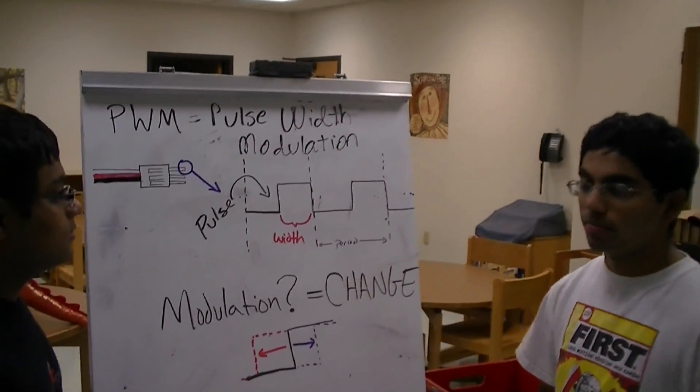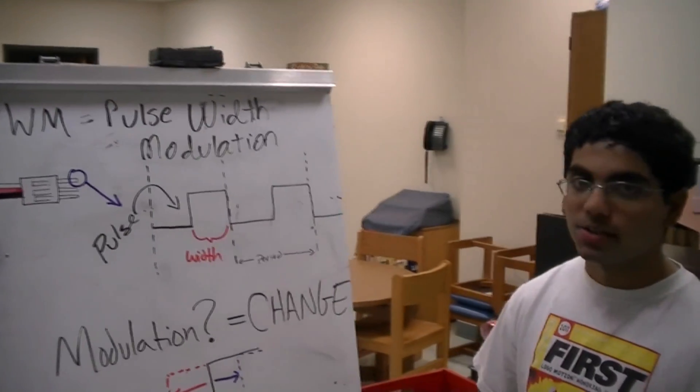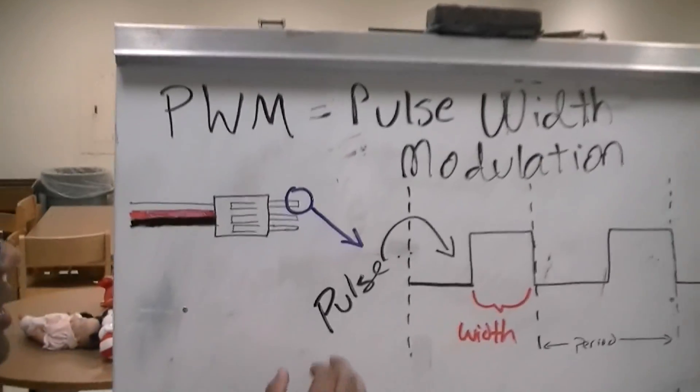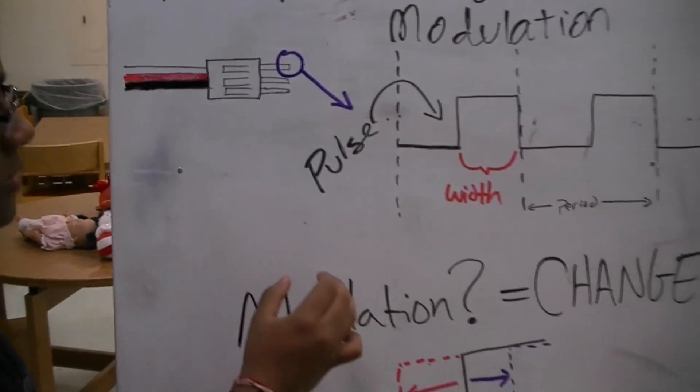Pulse Width Modulation. Now that sounds kind of complicated, but we're going to break it down to simplest terms. The white wire in the PWM cable sends commands from the C-Rio to the Jag or any motor controller.